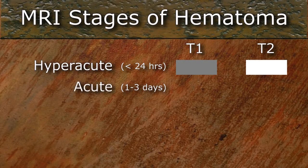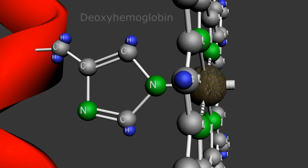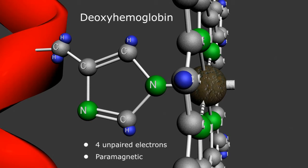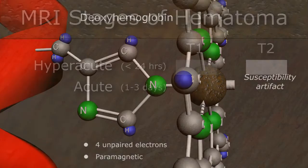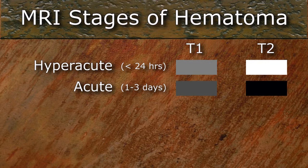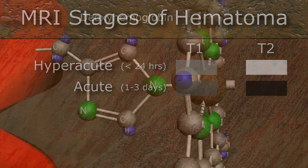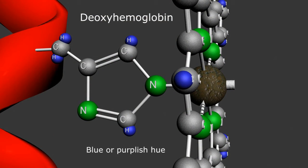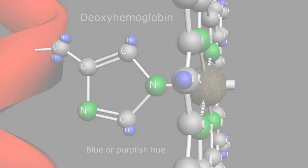With no available fresh oxygen, the heme molecule loses its oxygen molecule, becoming deoxyhemoglobin. The deoxygenated ferrous ion in the heme molecule now has four free electrons and becomes strongly paramagnetic. The high concentration of these paramagnetic ions inside the red blood cells causes susceptibility artifact from distortion of the local magnetic field, making deoxyhemoglobin dark on both T1 and T2-weighted images. Deoxyhemoglobin has a blue or purplish hue — hence the color of venous blood.